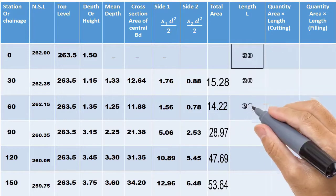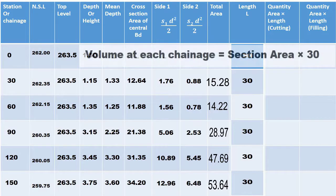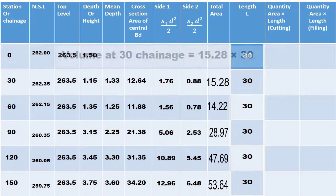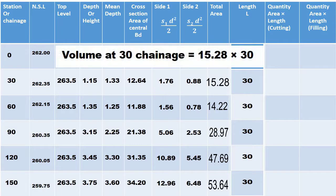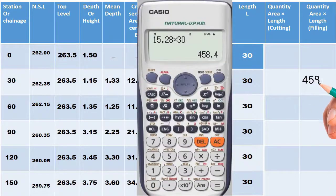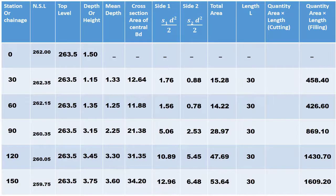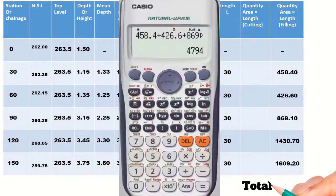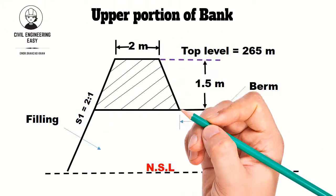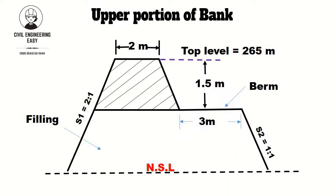The station interval is constant at 30 meters. Multiply the section area at each chainage by 30 meters to get the volume. For example, 15.28 × 30 equals 458.40 cubic meters between chainages 0 and 30. Add all volumes for each interval to get the total quantity of embankment for the lower portion, which equals 4794 cubic meters.